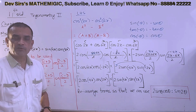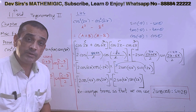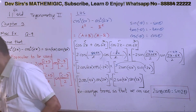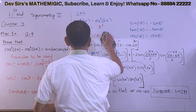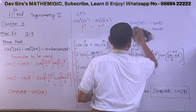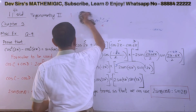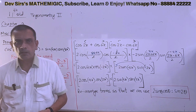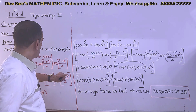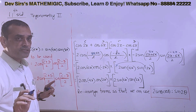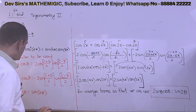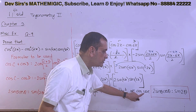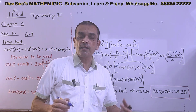So we have got all of this after using the various formulae. Now look at the RHS and think logically about what should be done. In the key step I have written: rearrange terms so that we can use 2 sin theta cos theta. So how do we rearrange the terms? The 2 is already there.